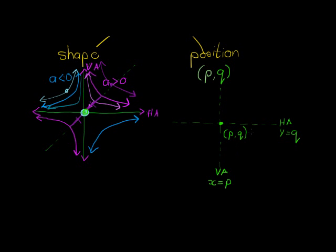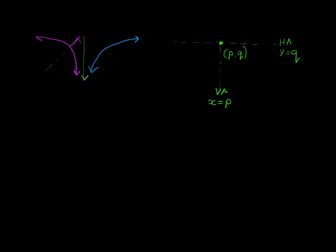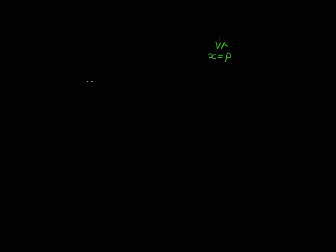Now why is that the case? Well, we know that the vertical asymptote is a line that the graph tends to but never reaches. Why doesn't it ever reach that line? Well, let's look at an example to explain.